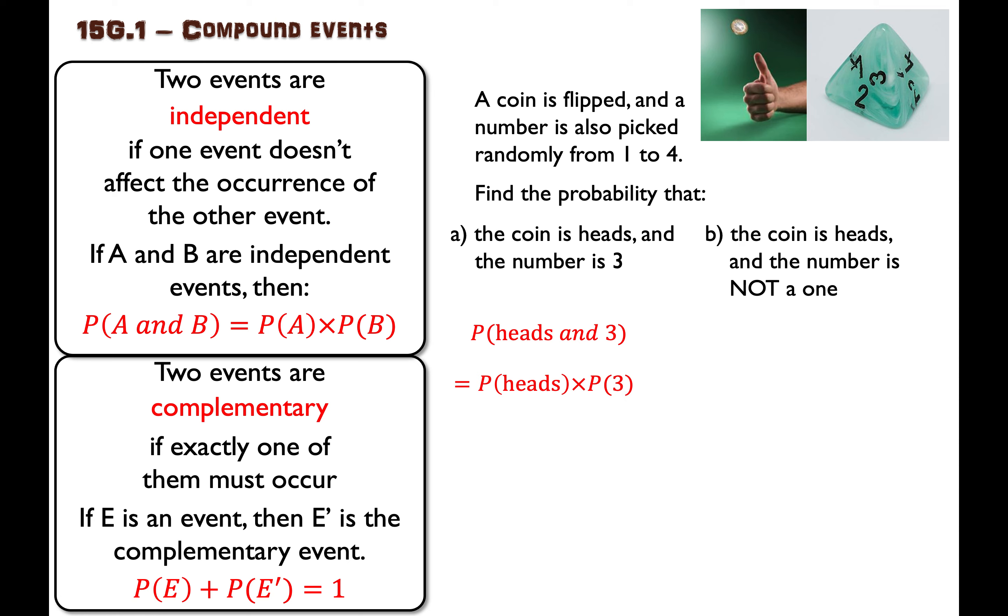Now we've broken it down into two simpler problems. If you flip a coin, what is the probability that you get heads? It is a half, one outcome is heads out of two outcomes in total. And if you pick a number from one to four, what's the chance that you get a three?